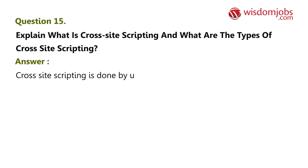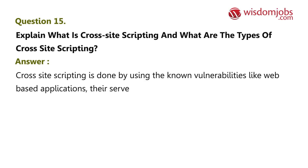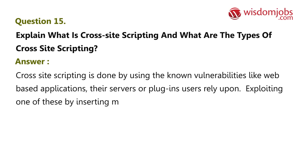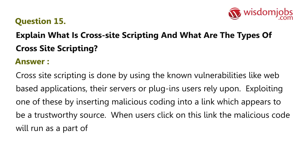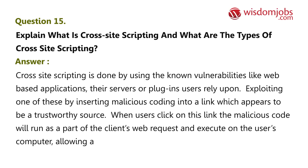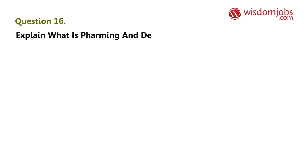Question 15: Explain what is cross-site scripting and what are its types? Answer: Cross-site scripting exploits known vulnerabilities in web-based applications, servers, or plugins that users rely upon. By inserting malicious code into a link that appears to be from a trustworthy source, when users click on the link, the malicious code runs as part of the client's web request and executes on the user's computer, allowing the attacker to steal information.